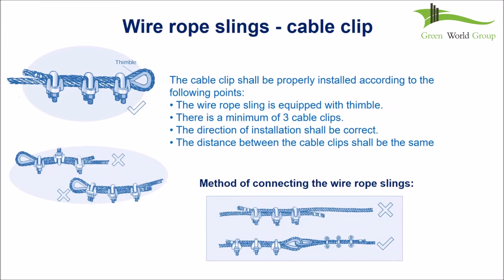Cable clips shall be properly installed: the wire rope sling must be equipped with a thimble, there is a minimum of three cable clips, the direction of installation shall be correct, and the distance between the cable clips shall be equal.